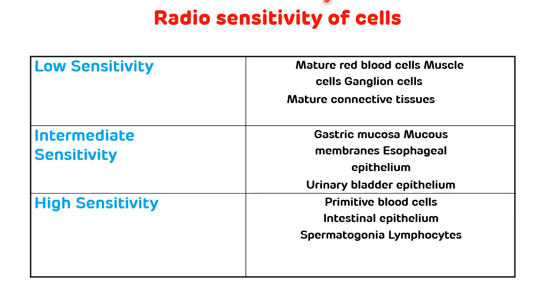Radiosensitivity of various cells: mature red cells, ganglion cells, and mature connective tissue cells have very low sensitivity to radioactivity. Gastric mucosa, mucous membranes, esophageal epithelium and urinary bladder epithelium have intermediate radiosensitivity. Primitive blood cells, intestinal epithelium, spermatozoa and lymphocytes have very high radiosensitivity.